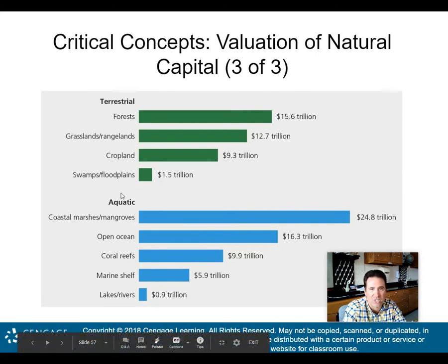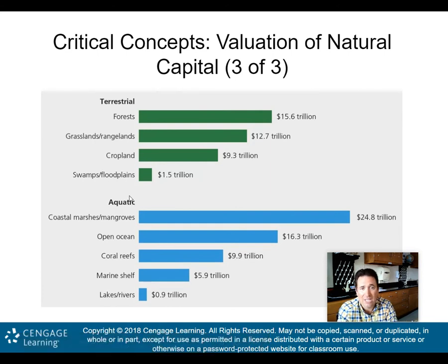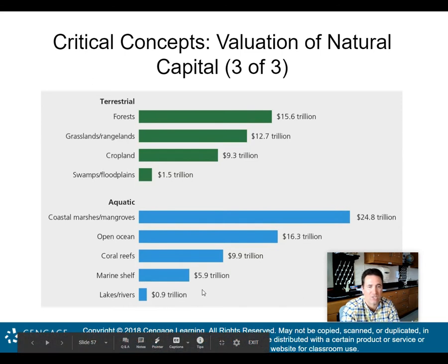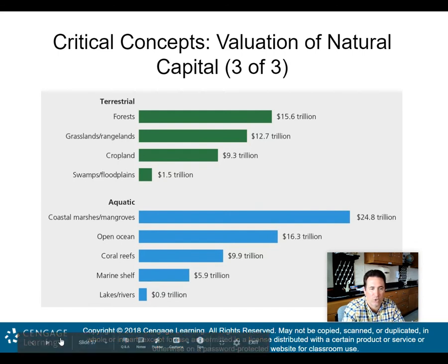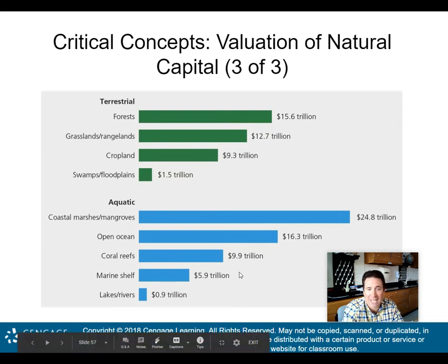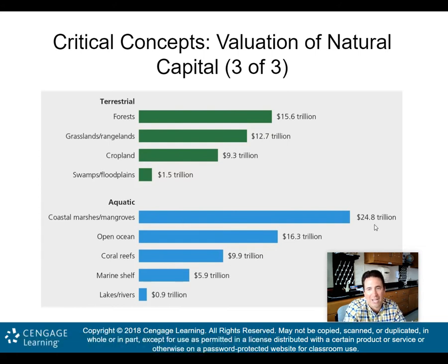Coastal marshes and mangroves — aquatic biomes — provide almost $25 trillion in ecological services. Open ocean is $16 trillion, coral reefs $9 trillion, marine shelf almost $6 trillion, and lakes and rivers almost $1 trillion in natural capital from ecological services. These biomes are helping us far more with their services than we're making by cutting them down. If you pave over a coastal marsh to put up a condominium complex, you're not making $25 trillion.